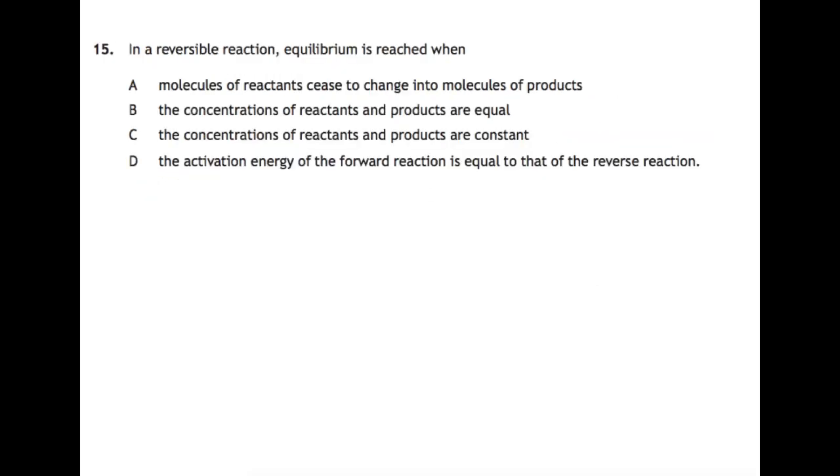For question 15, this is just purely a knowledge question. You have to know what the definition of an equilibrium is. So in an equilibrium, you start off with your reactants, they move towards being products. At the same time, some of them come back towards being reactants. You reach equilibrium when the rate of production of reactants and products is the same. The concentrations at that point are constant but not necessarily equal, so for this answer, you are looking at C as your answer.